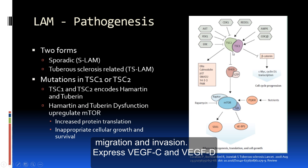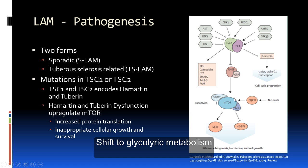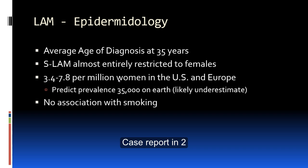Having mutated TSC gene proteins up-regulates the mTOR pathway, causing inappropriate cellular growth and survival. The mean age of diagnosis is around 30 to 40 years old. Sporadic LAM is almost entirely restricted to females — there is only one case report of LAM in a male. It affects approximately 3.4 to 7.8 per million women in the US and Europe, and unlike PLCH, it is not associated with smoking.